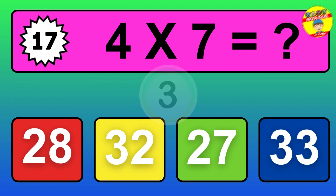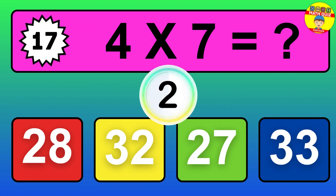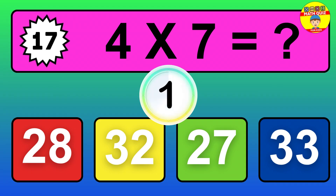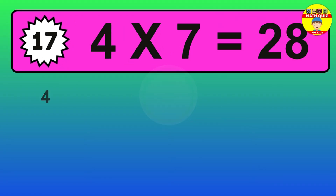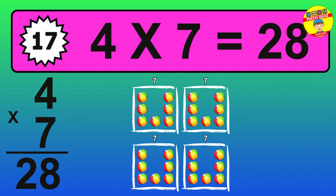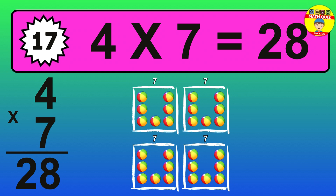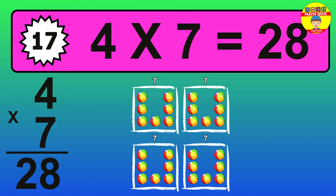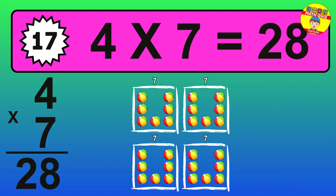The answer is 4 times 7 is 28. To calculate, we have 4 groups with 7 balls each one. So, how many balls do we have? 28 balls.